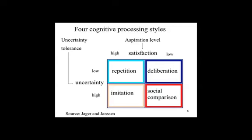We now present the CONSOMAT model, where agents represent consumers and make decisions using one of four heuristics. Which heuristic to use depends on whether the agent is satisfied or not, and whether the agent is uncertain or not.